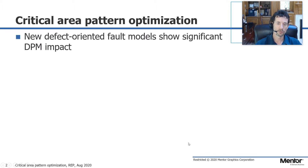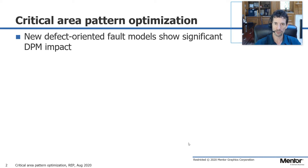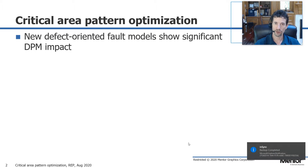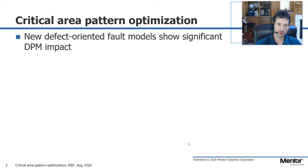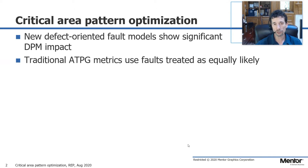Some of the new defect-oriented fault models — we also call these automotive-grade ATPG — are very high quality tests. We've seen these fault models have important, unique detection. The question is always how much do I mix in these new fault models, and what's the best mix of my existing fault models and these new ones? In traditional ATPG, metrics and sorting were based on the number of faults detected, so we treated every fault as equal.